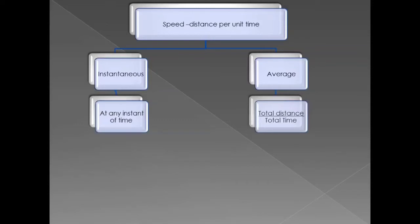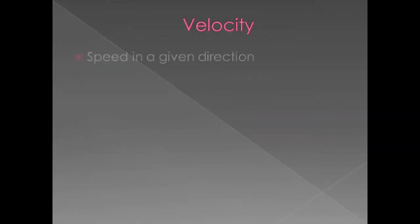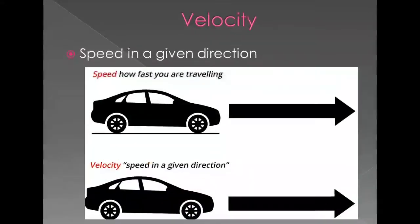Instantaneous speed is the speed of a moving body at any instant of time. Velocity is the speed of a moving body but in a given direction. So speed and velocity magnitude can be the same, but in velocity the direction also has to be specified.